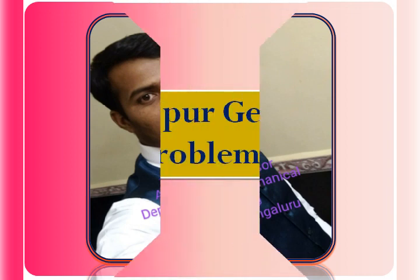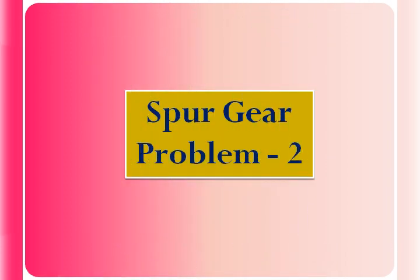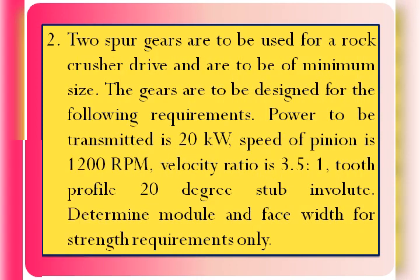With this, we will solve one of the problems in spur gear. The statement of this problem is as follows: two spur gears are to be used for a rock crusher drive and are to be used for minimum size. The gears are to be designed for the following requirements: power to be transmitted is 20 kilowatt, speed of the pinion is 1200 rpm, velocity ratio is 3.5 to 1, tooth profile 20 degree stub involute. Determine module and face width for strength requirements only.